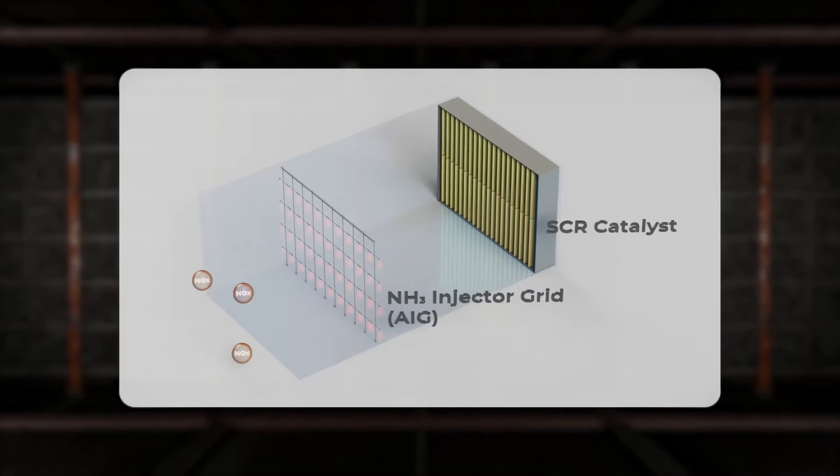However, if the face of the catalyst is fouled and the flow is disrupted, the SCR cannot reduce the NOx at the desired rate, while high SCR pressure drops may limit the output of the facility.